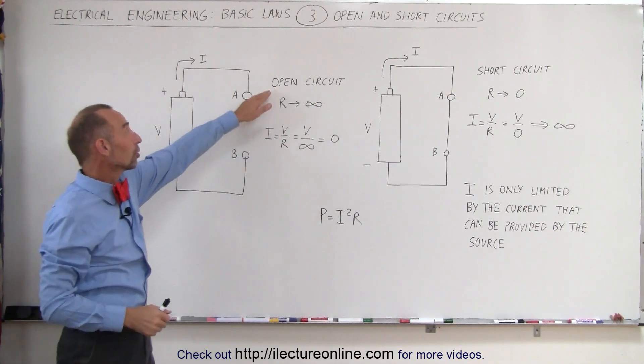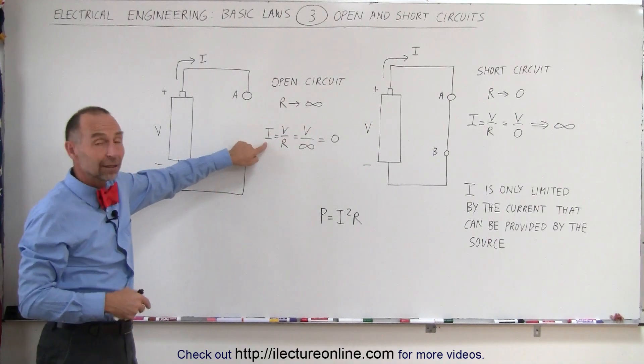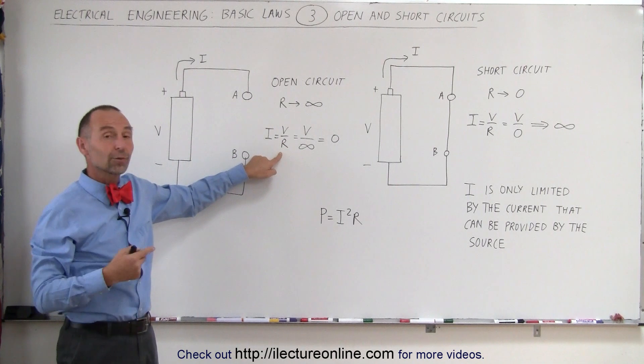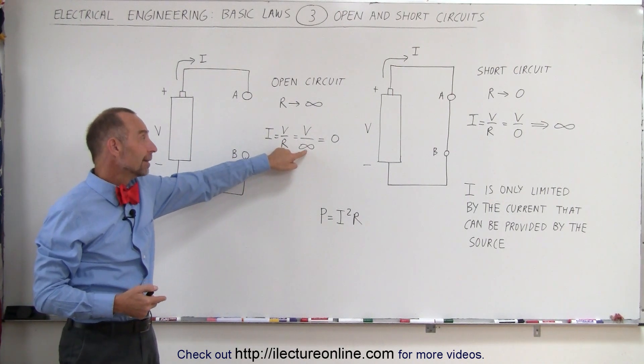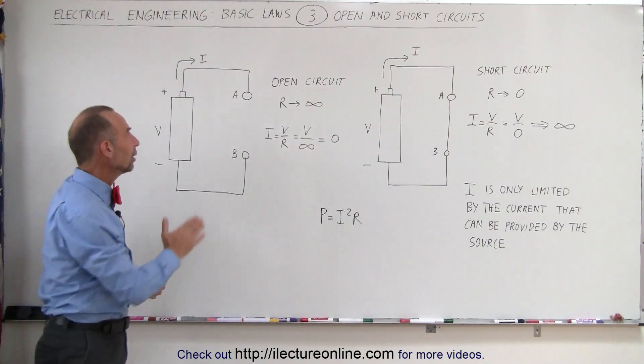In essence, an open circuit provides an infinite amount of resistance to current flow. Therefore, by Ohm's law, I = V/R. If R reaches infinity, then V divided by infinity equals zero. Therefore, there's no current in an open circuit.